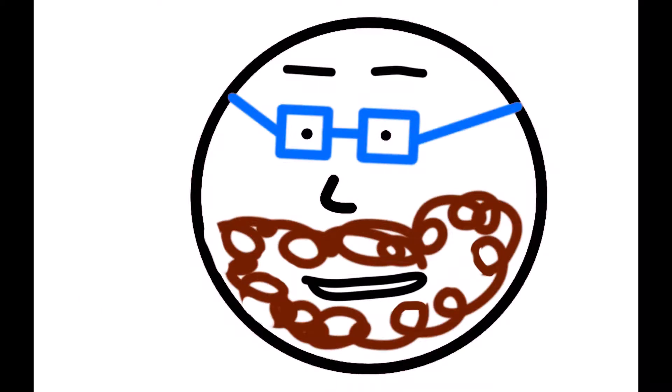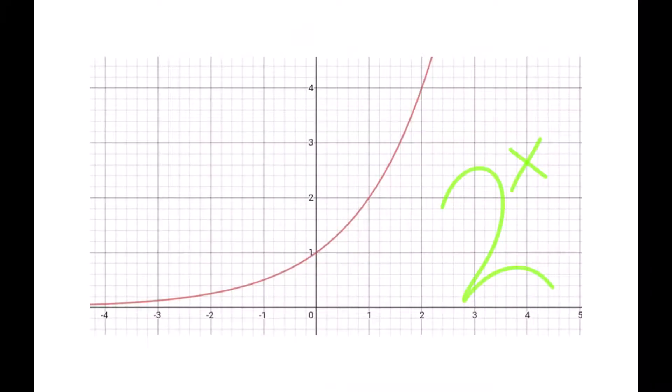Every step of distance one you take, the value gets multiplied by the base of function. So for example, the base of 2 to the x is 2. Therefore, if 2 to the 1 is 2, and 2 to the 2 (2 being a distance of one from 1) is 2 to the 1, 2 times 2, which is 4, and it's 2, 2 squared is 4.